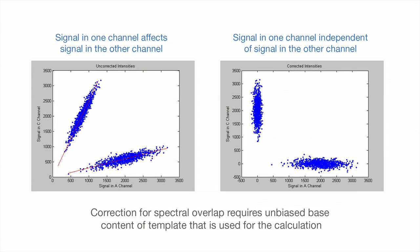To illustrate the effect of crosstalk, the plot on the left shows uncorrected raw signals in the C and A channels, which are both excited by a red laser or LED. The plot on the right shows the corrected signal of the same two bases, which now shows a purer signal for each base.